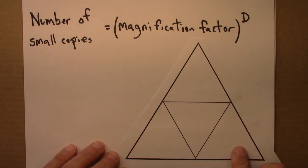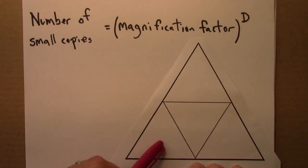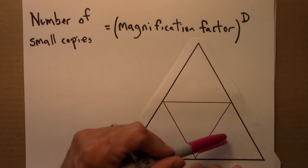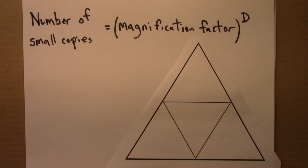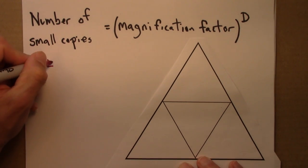So first, for this shape, how many small triangles do I see in the big triangle? Well, one, two, three, four. So the number of small copies is four.